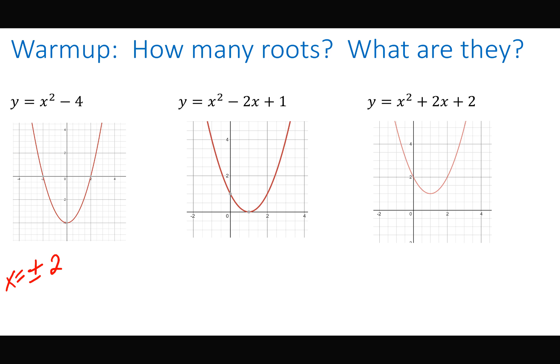We can identify plus or minus 2, and we know that it's a degree-2 polynomial. In this case, we know that this one actually has two real roots, because we can see both of them.